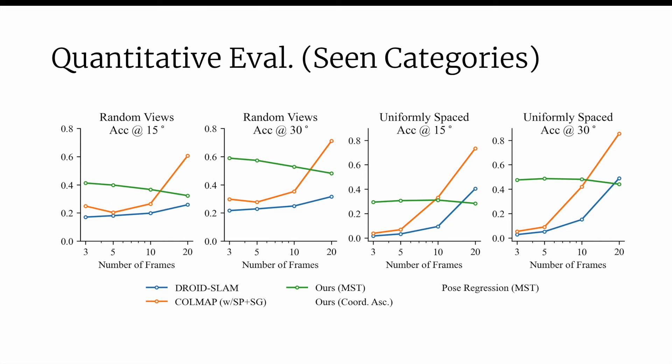We find that the greedy maximum spanning tree solution performs better initially but gets worse with more frames due to drift. We find that our solution with coordinate ascent performs the best given sparse views. However, it is eventually surpassed by correspondence-based approaches at 20 frames.